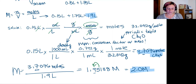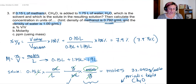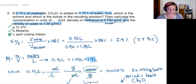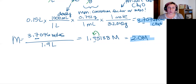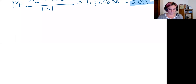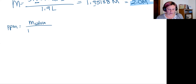We've completed percent volume by volume and molarity. Now we need to do parts per million by mass. The equation is: parts per million equals the mass of the solute divided by the mass of the solution, times 10 to the power of 6.